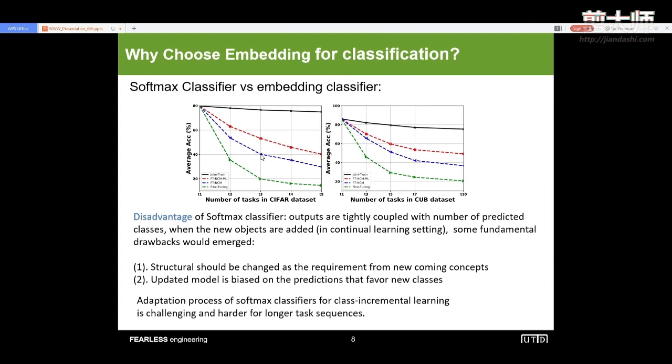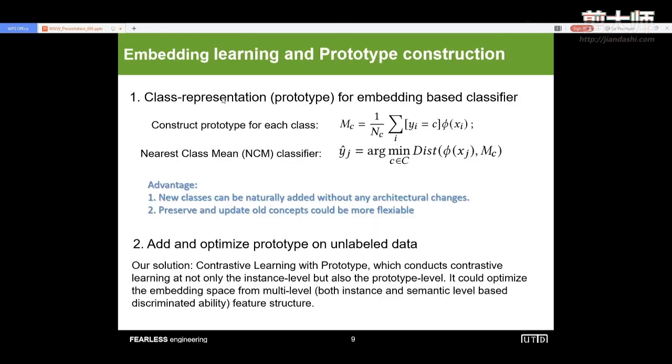On different benchmarks, we use the green line to show the performance of the softmax classifier during fine-tuning when we use our work on a sequence of tasks. The blue line shows the performance when we apply the embedding-based classifier. We could observe that the softmax classifier would have significant performance drop-down, especially when a large amount of the following classes emerge during the continuous setting. We call it catastrophic forgetting. The reason for this phenomenon is that the output of the softmax functions are tightly coupled with the number of predicted classes. It is a fixed value. So when new objects are added in the continuous setting, some fundamental drawbacks would emerge.